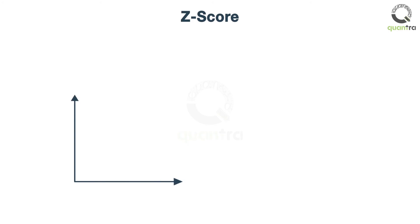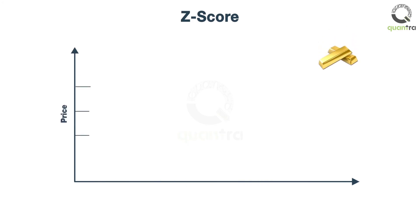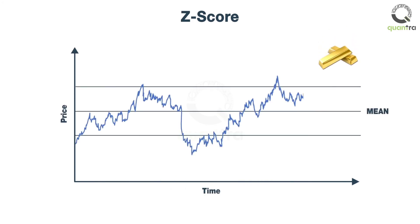For example, the Z-score of gold can indicate when a trade is to be executed. If the Z-score of gold rises above the upper threshold value, then sell the gold expecting the price to fall back towards the mean value. Similarly, when it falls below the lower threshold value, then buy the gold.